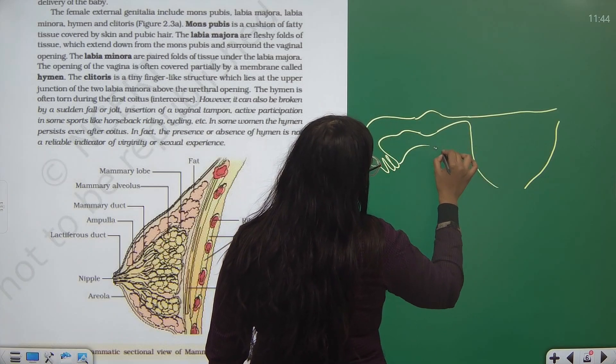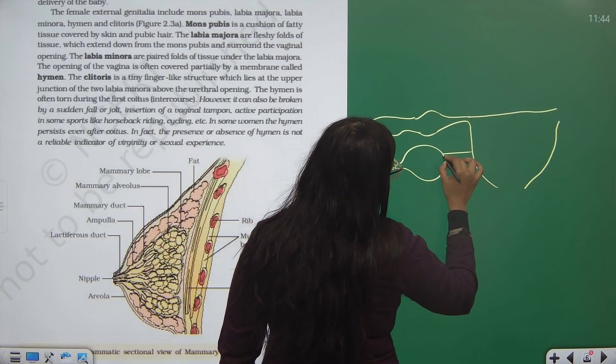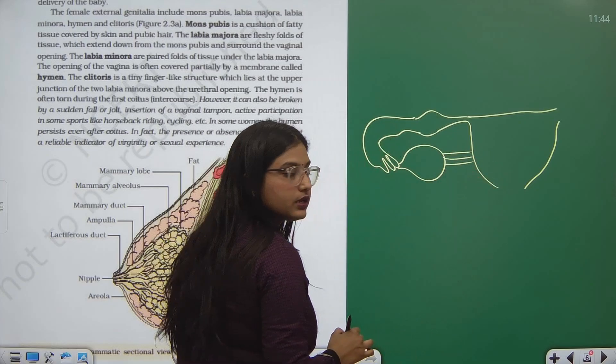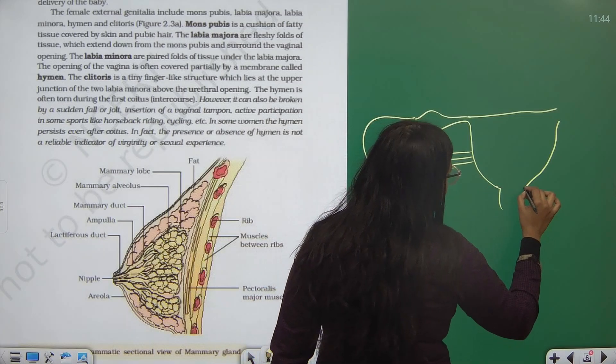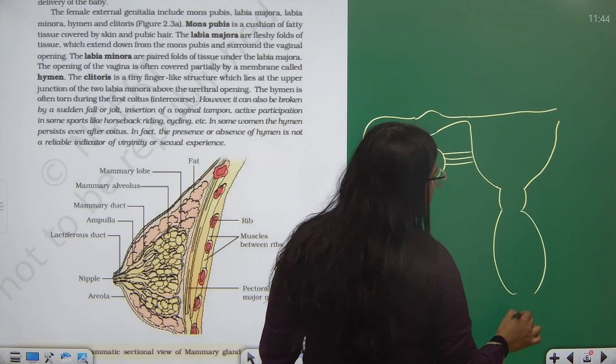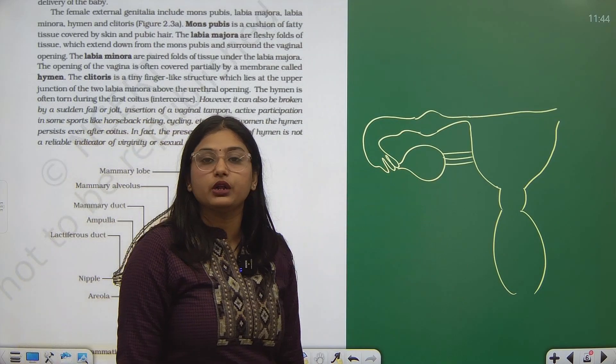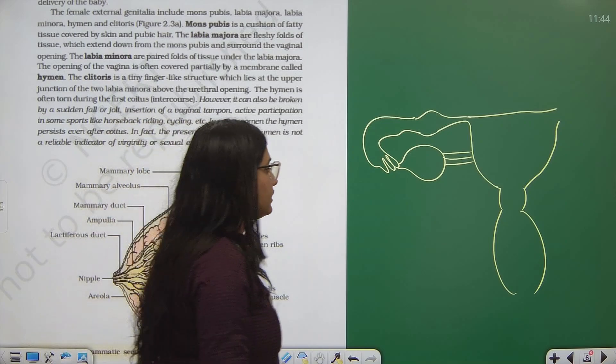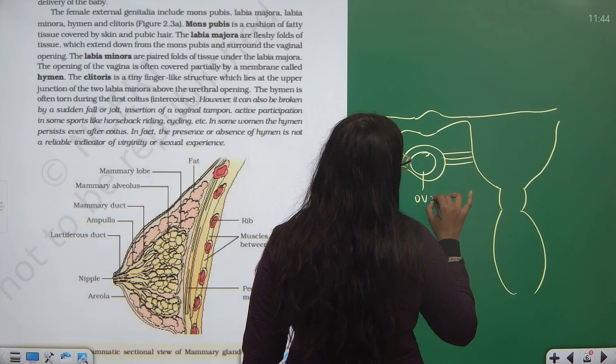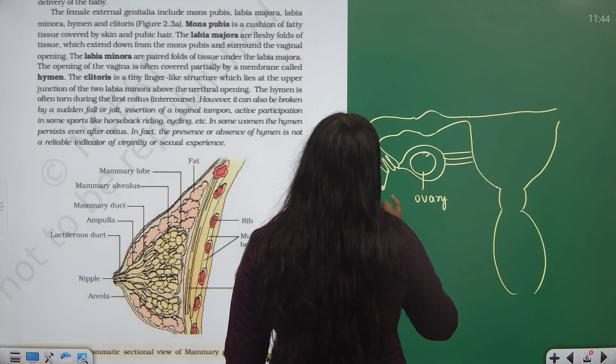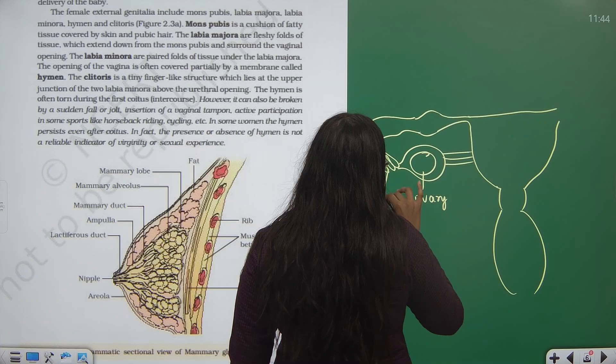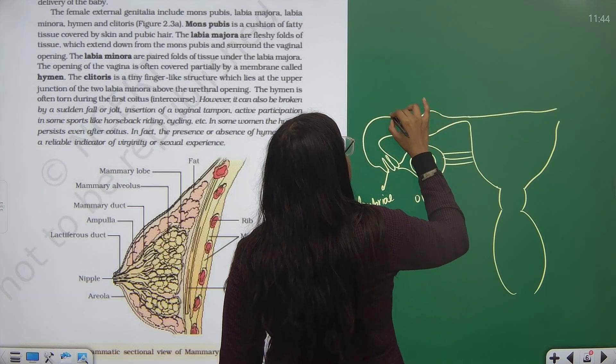This uterus folds up into cervix that further opens up into vagina. These were the basic female reproductive parts that we studied yesterday. To label them, we have ovary, fimbri, and infundibulum.